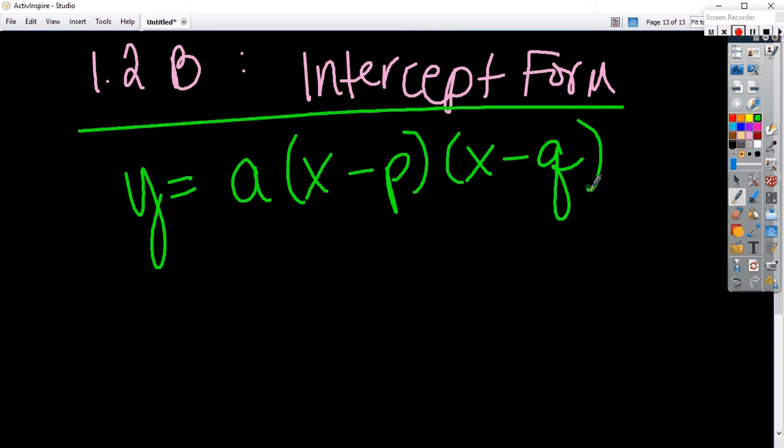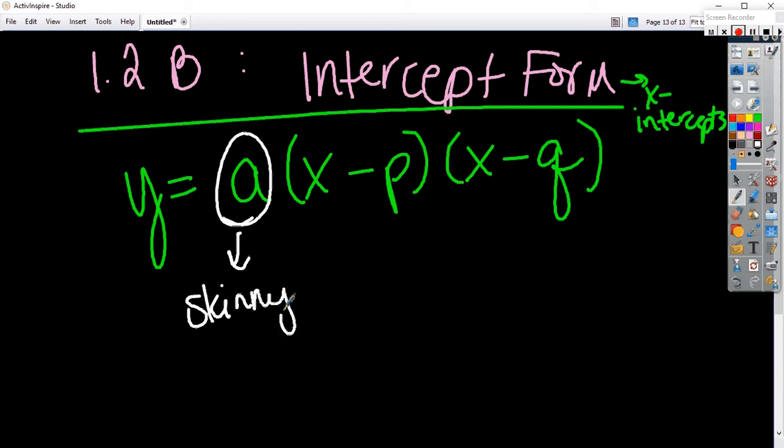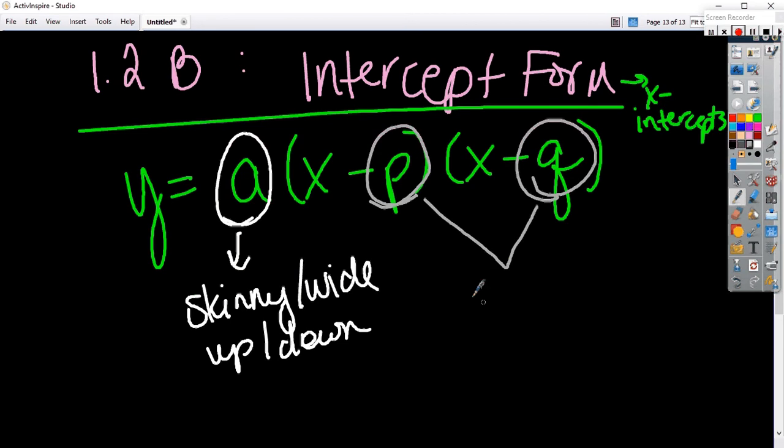Tell me, what is an intercept? First of all, where a point meets what? The axis. An x or a y axis. In this case, intercept form is talking about x-intercepts, so where it crosses the x-axis. My a still does the same thing. Tell me what it does. We've been doing a in standard form. Skinny or wide? What else does it tell you? Up and down. Okay. Here now, vertex form gives us the vertex. Intercept form gives us the intercepts. So p and q are the two x-intercepts, but you have to change the sign.